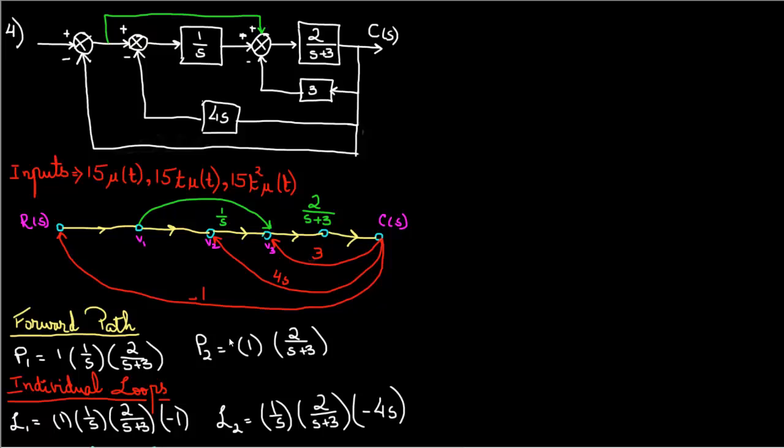Hello everyone, I'll be doing problem 4 from Controls Homework. For this problem we are given a block diagram for which we need to condense it and find the steady state error for the system.